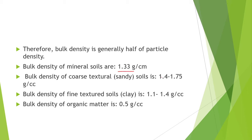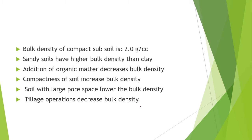Particle density is also called real density, true density, grain density or absolute density. Particle density decreases when organic matter is added; it increases in the presence of heavy minerals. Bulk density is the ratio of weight of oven-dried soil to its bulk volume, including pore space. It equals particle density (2.6) multiplied by volume of solids (0.5) = 1.33 gram per cc. Sandy soils have higher bulk density than clay. Addition of organic matter decreases bulk density. Compactness increases bulk density. Tillage decreases bulk density by increasing pore space.